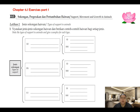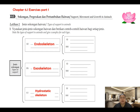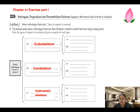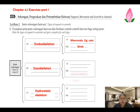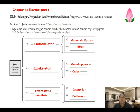The first question asks you to write all the types of support for animals and give examples. We have three types: endoskeleton, exoskeleton, and hydrostatic skeleton. For examples — endoskeleton: cats, elephants, humans, birds. Exoskeleton: grasshopper, crab. Hydrostatic skeleton: caterpillar and earthworm. These are simple examples; there are many more depending on your answer.